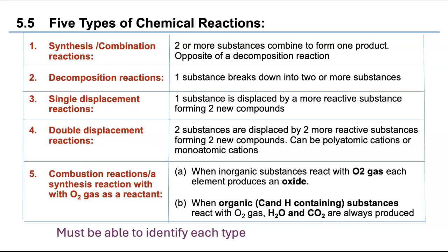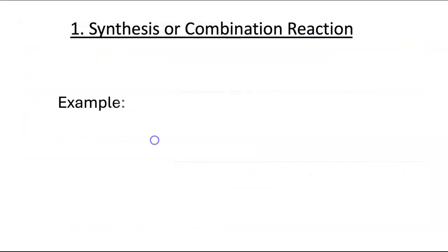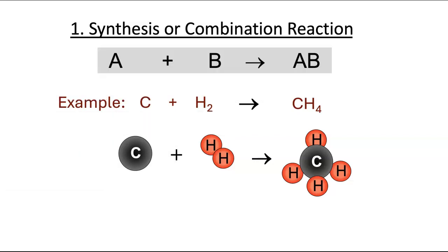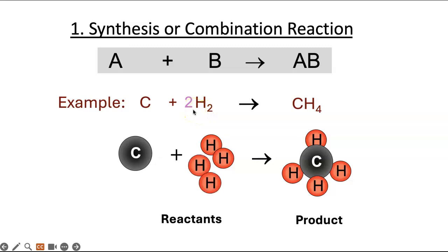You must be able to identify each type when shown a chemical reaction. Here's an example of a synthesis reaction: carbon and hydrogen gas combine to form methane gas. The generalized equation is A + B → AB. You need to place a coefficient of 2 in front of H₂ because you have four hydrogens — two times two is four — so now it's balanced. The mole ratio is 1:2:1.